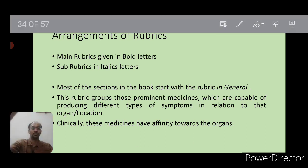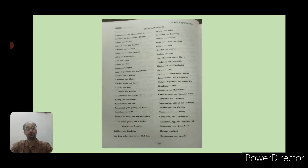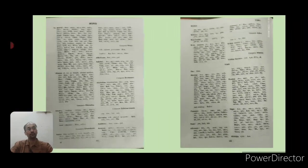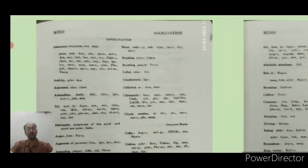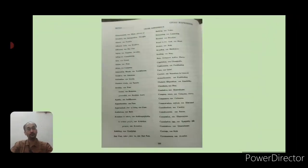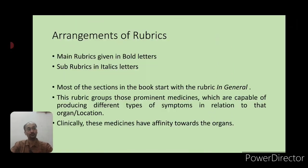To summarize, every chapter goes through six different subsections. Taking the Mind chapter as an example: it has no location, so we have an alphabetical list of all sensations, then a separate subsection of time, then a subsection of aggravating modalities in alphabetical order, then amelioration, then cross references, and finally concordance. Most chapters are divided into these six subsections.